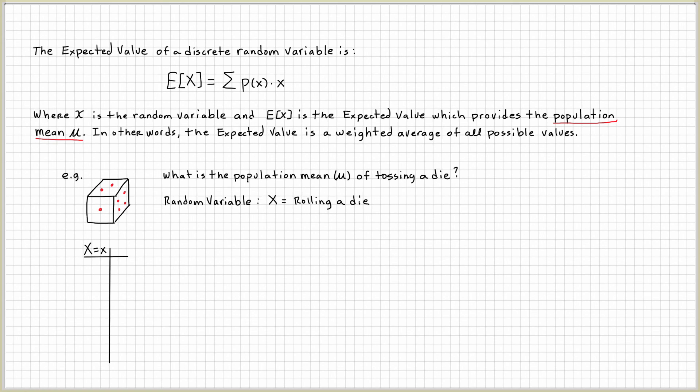What I want to do is create a table called a probability distribution table. And this table models my tossing of a die. And when we talk about random variables, we're talking about the outcomes, all the possible outcomes of tossing a die.